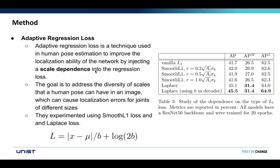In this method, they also use adaptive regression loss, which is a technique used in human pose estimation to improve the localization ability of the network by injecting scale dependency into the regression loss. The goal is to address the diversity of scales that human poses can have in an image, which can cause localization errors for joints of different sizes. They experiment using smooth L1 loss and Laplace loss. The results show that Laplace loss using b in the decoder gives the highest performance.